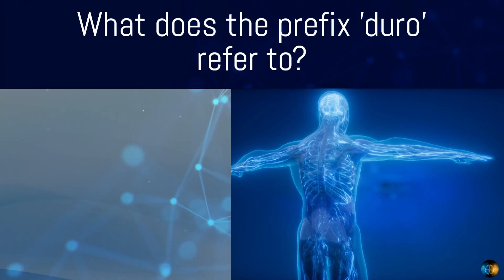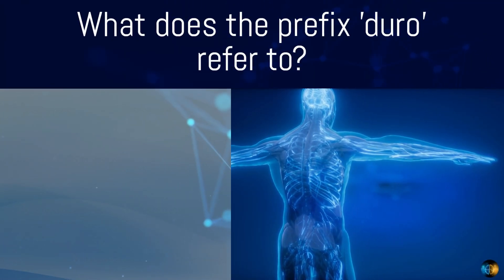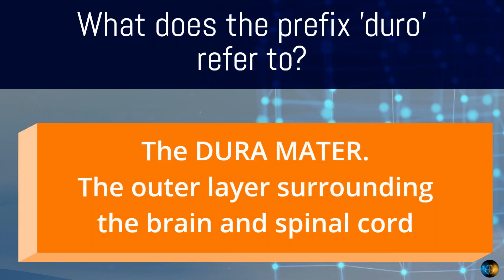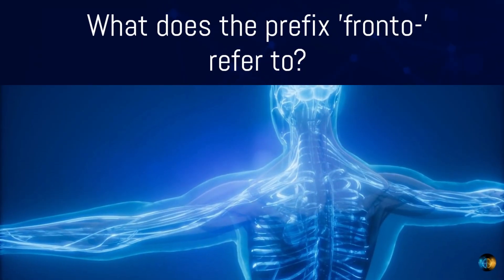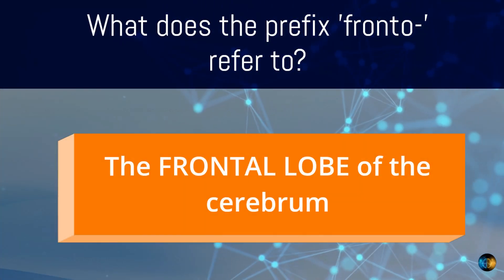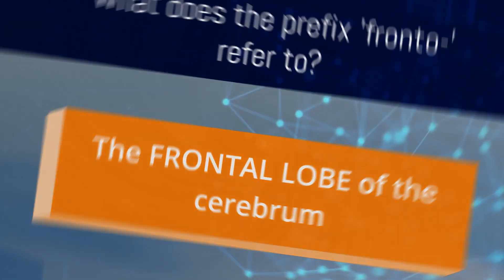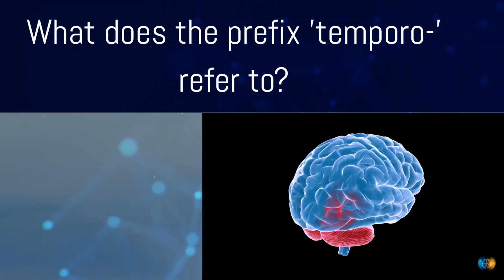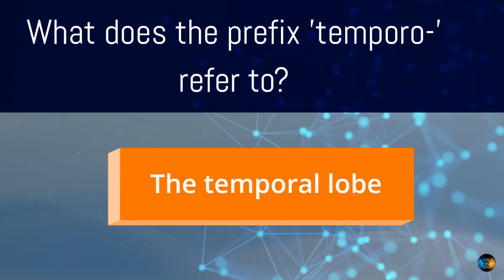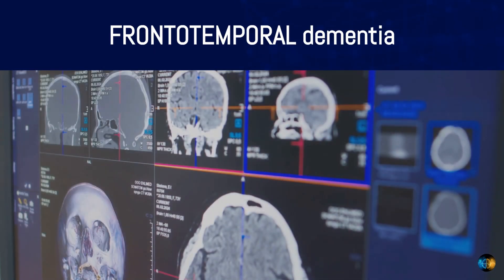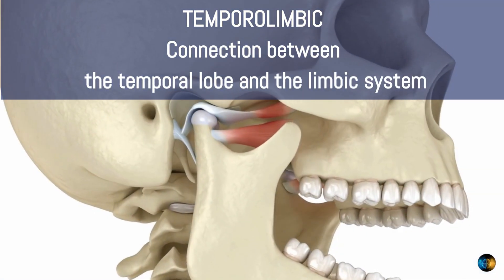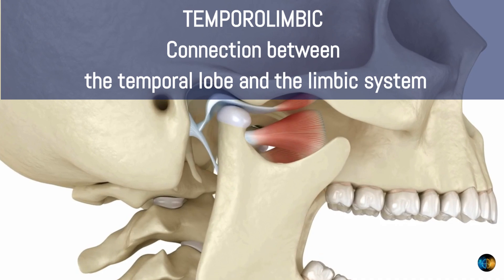What does the prefix 'dura' refer to? The dura mater — the outer layer surrounding the brain and spinal cord. What does the prefix 'frontal' refer to? The frontal lobe of the cerebrum. What does the prefix 'temporo' refer to? The temporal lobe. For example, frontotemporal dementia, or temporal limbic, which refers to the connection between the temporal lobe and the limbic system.